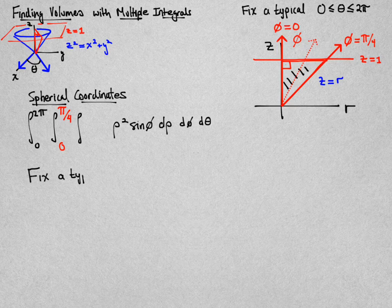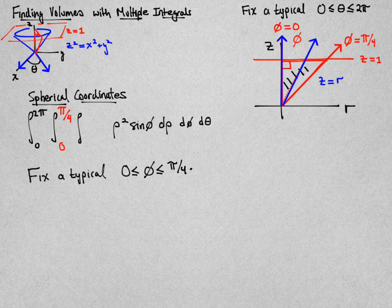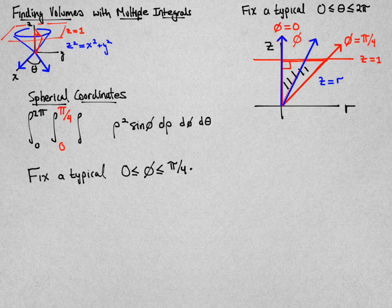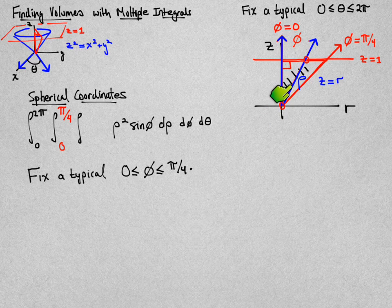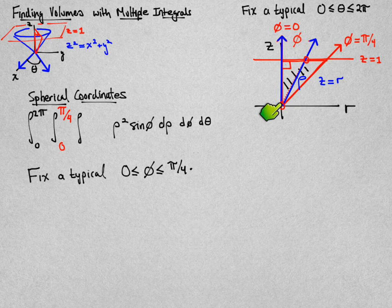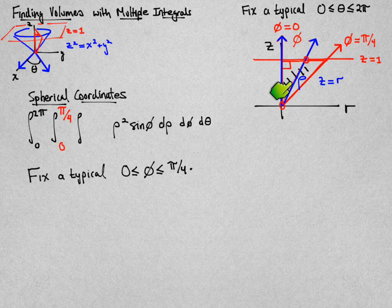I'm now going to fix a typical value of the angle phi in that range, and see what that tells me about the length rho. Remember that rho is the distance from the origin to the point that you want to get to. For a given value phi, that's a blue angle that I've drawn here, I'm allowed to start with rho equal to 0, and then I have to exit my region at this point here.